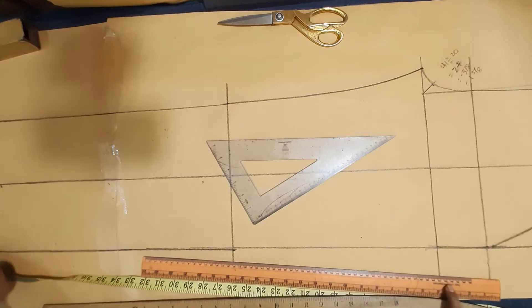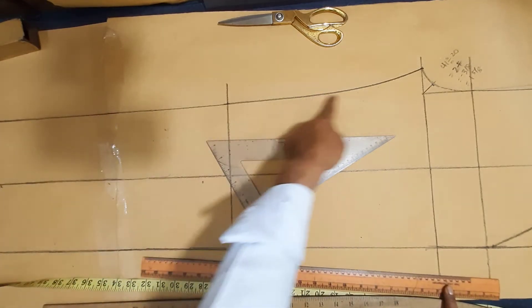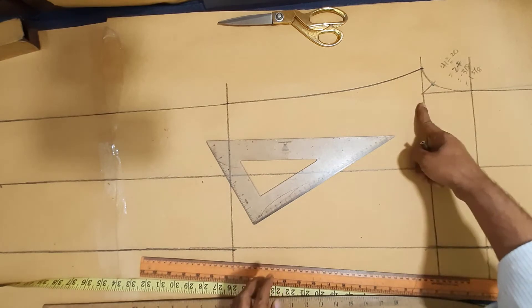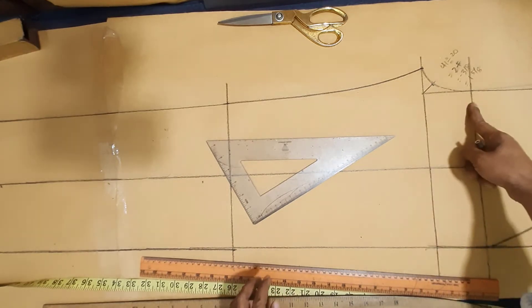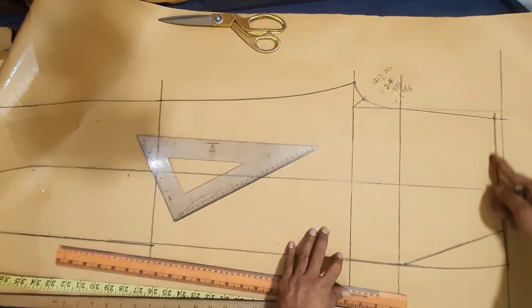In front part out seam line, bottom hem line, in seam line, knee line, thigh cross line, hip line, cornerize, waist seam line.